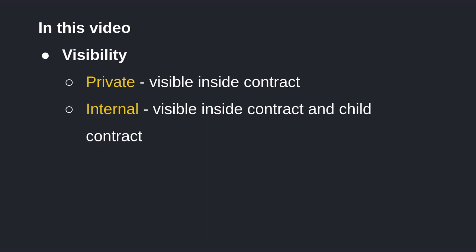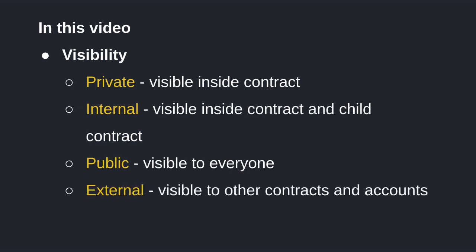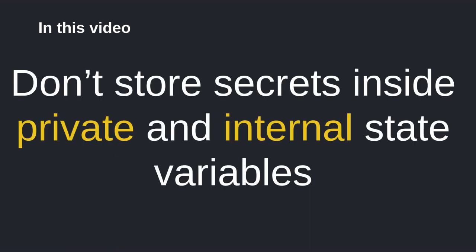In this video, we went over the four visibilities that state variables and functions can have. Private means it is only visible inside the contract. Internal means it is only visible inside the contract and child contract. Public means it is visible to the contract, child contract, other contracts, and accounts. External means it is visible to other contracts and accounts, and not visible inside the contract. And don't store secrets inside private and internal state variables.